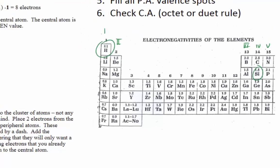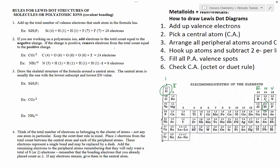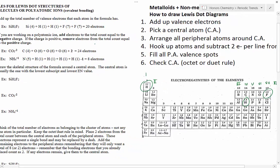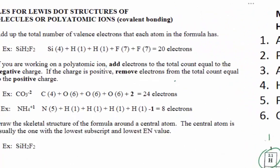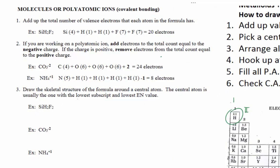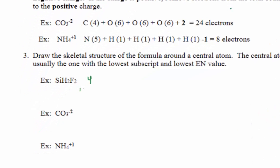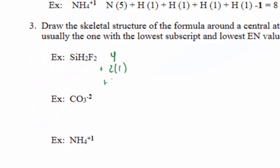So we're going to do that for our different atoms. Silicon is in group 4, it has four valence electrons. Hydrogen has one, and there are two of them. And fluorine has seven. So adding them up: four plus two times one plus two times seven. When we add up the total number of valence electrons, we're going to have 20. So we have 20 electrons to work with, which also means we have 10 pairs of electrons.